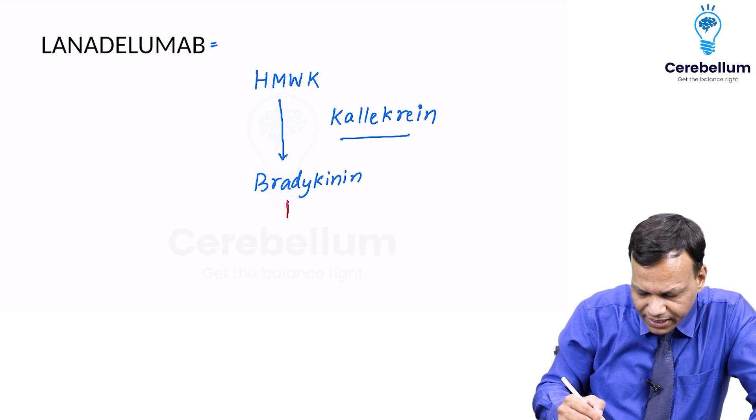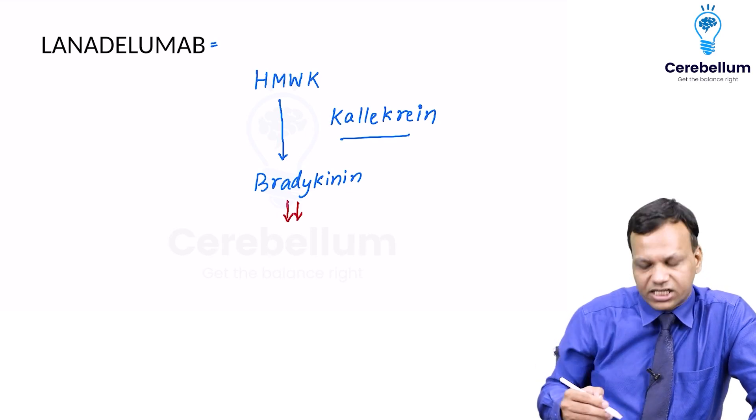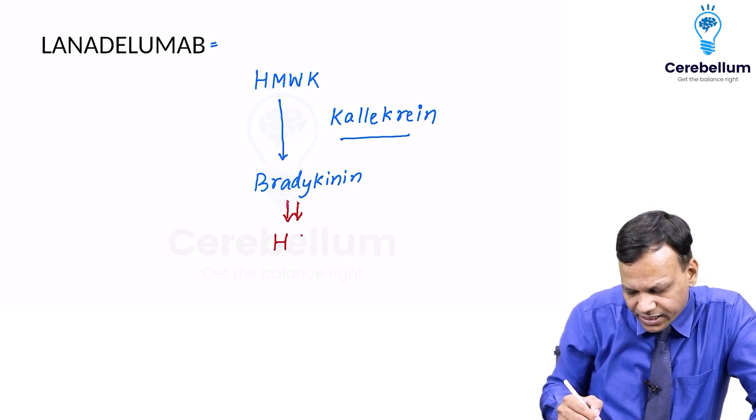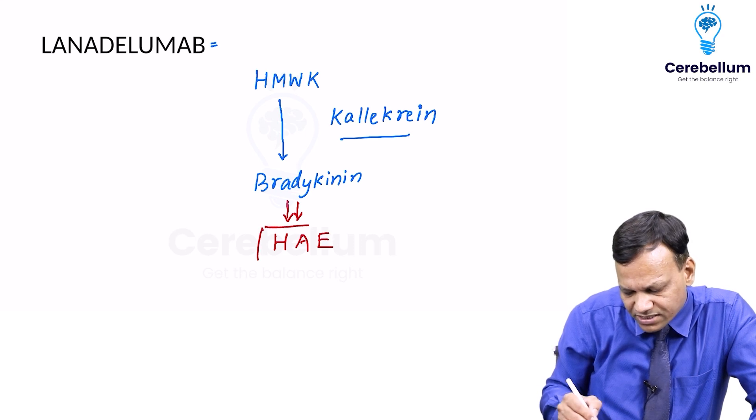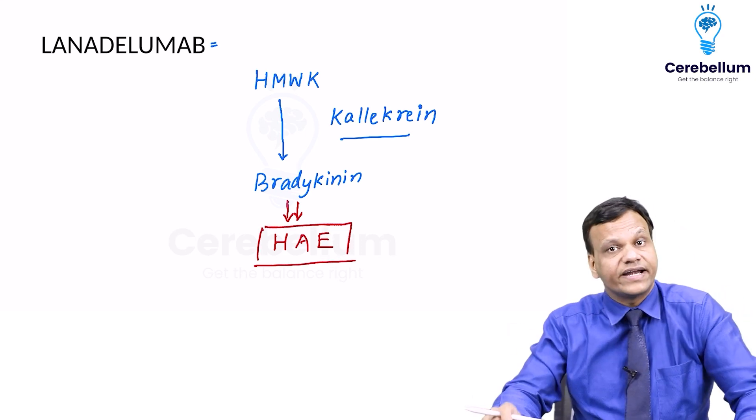We know excessive bradykinin is responsible for a condition known as hereditary angioneurotic edema. So excessive bradykinin can cause hereditary angioneurotic edema.